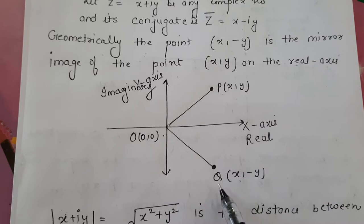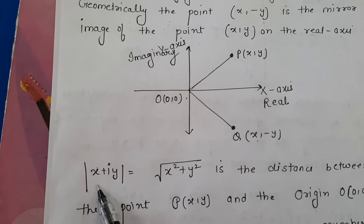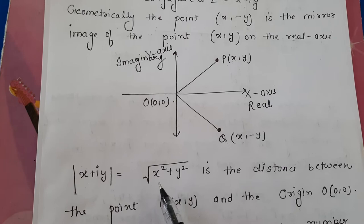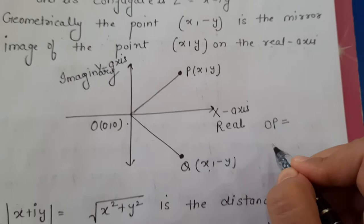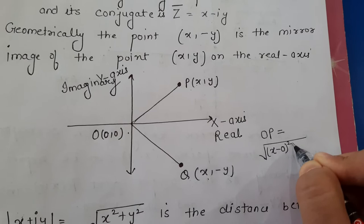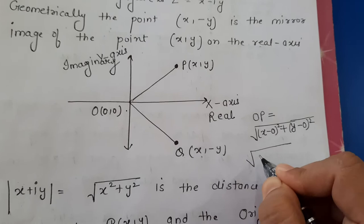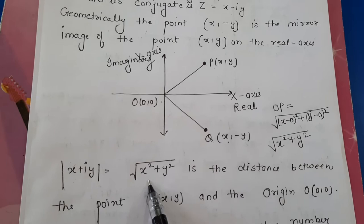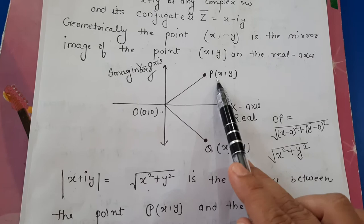Geometrically, the conjugate of any point P represents its mirror image along the x-axis, or real axis. Next, the modulus of a complex number is given by the formula √(x² + y²). Using the distance formula between point O (origin) and point P, you get √((x-0)² + (y-0)²) = √(x² + y²). This means the modulus represents the distance of point P from the origin.